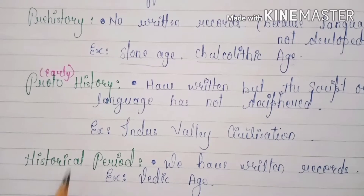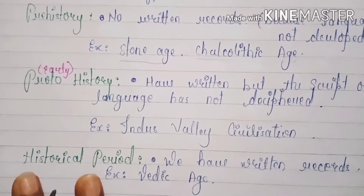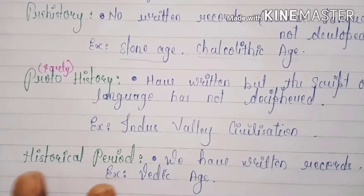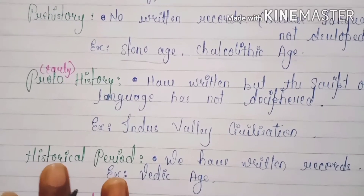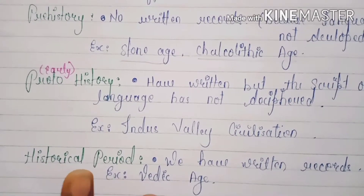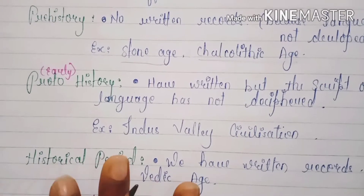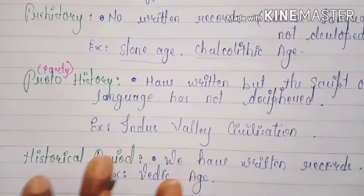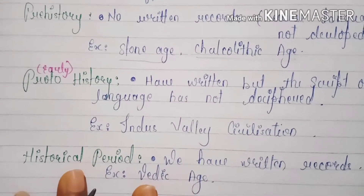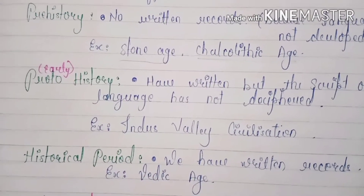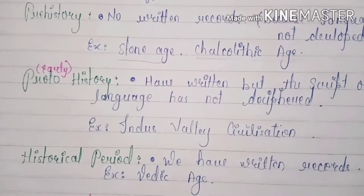Then we talk about the Historical period. Here we have written records. We call it the Vedic age.